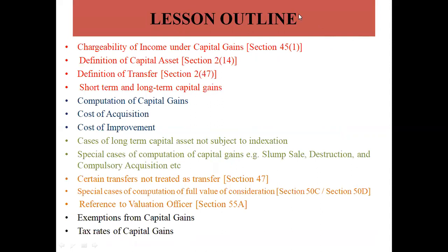This is our lesson outline, covering what is discussed in this topic. First is chargeability of income under capital gains — section 45 subsection 1. Then definition of capital assets — section 2 subsection 14. Definition of transfer — section 2 subsection 47. Short-term and long-term capital gains — all discussed in lecture one. Then computation of capital gains, cost of acquisition and cost of improvement — discussed in part 2. Also carrying cases of long-term capital assets subject to indexation.